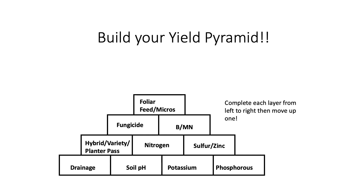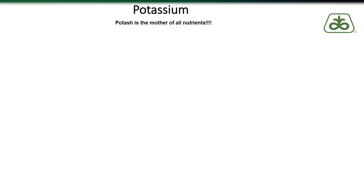We refer to potassium as the mother of all nutrients because of all the different plant interactions that occur with potassium, as well as how it can influence the efficiency of other nutrients in our crop production system. Things like water use efficiency, drought tolerance, disease, and potassium is also one of the important nutrients when it comes to stalk quality and standability.